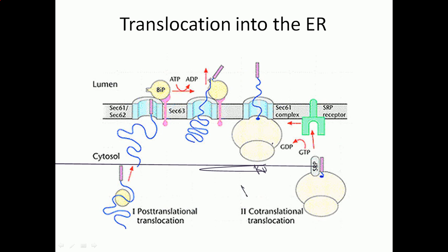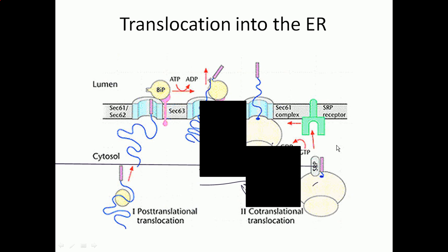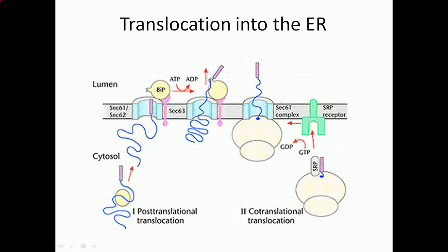In co-translational translocation, the ribosome is synthesizing the polypeptide chain, and as it synthesizes, it is inserting itself into the ER through the ER uptake complex made up of the Sec61 complex. This is called co-translational translocation because the proteins are translocated during the translation process, so both things are going on simultaneously at the same time.